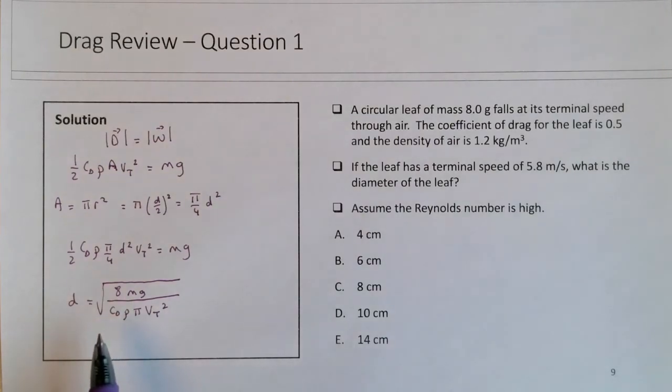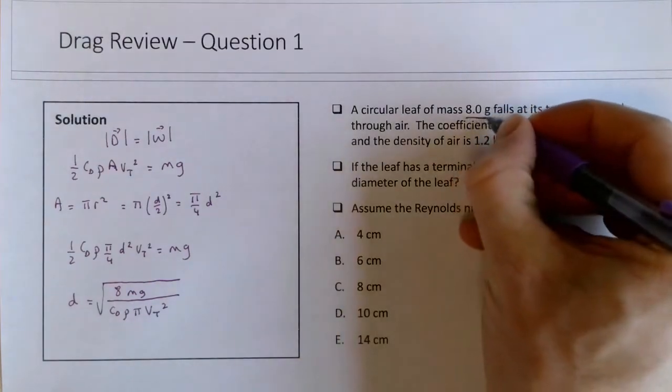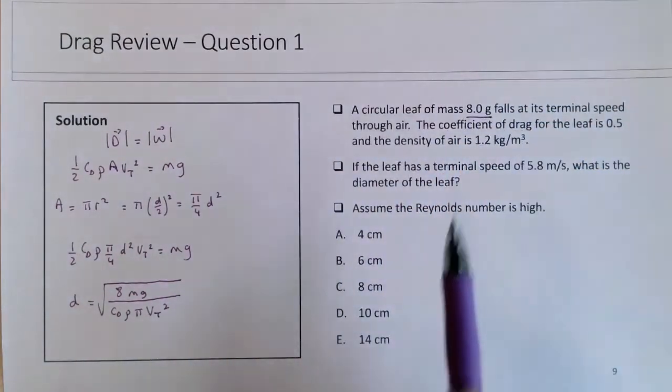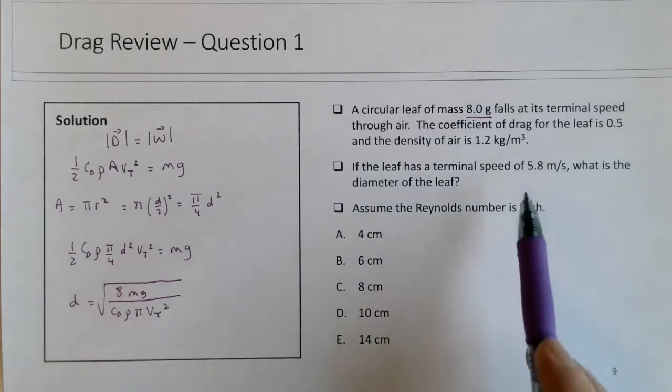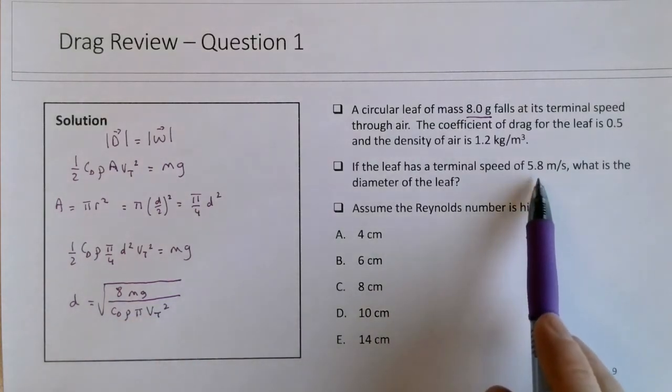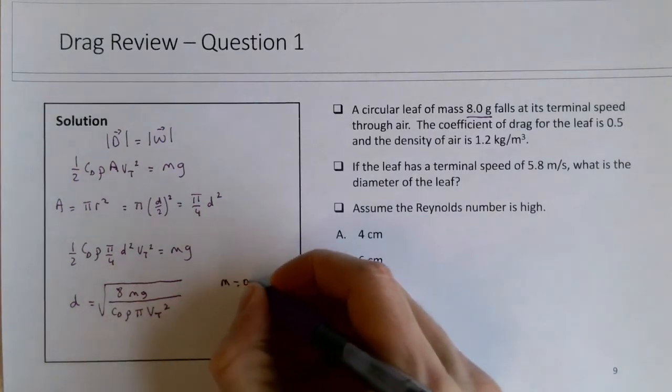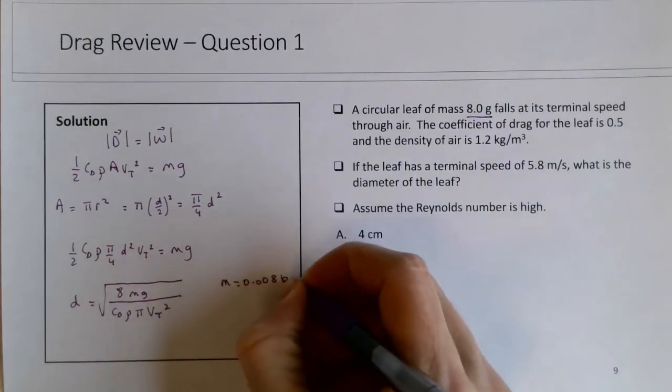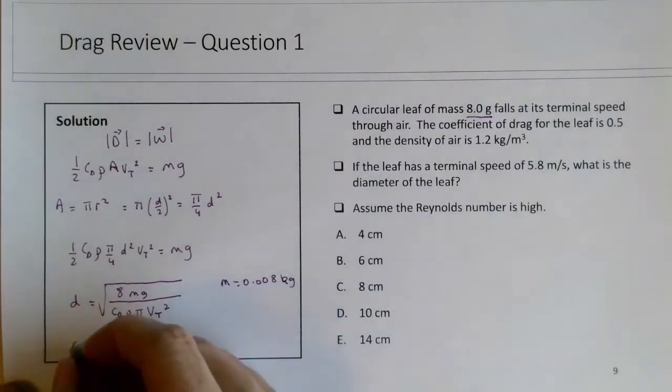We're given the mass of the leaf, and you're going to have to convert that to kg, so 0.008 kg. G is a constant, cd is given, rho is given in the correct units, pi is a constant, and you're given the terminal speed in the correct SI unit. The only thing you need to make a note of is that m is 0.008 kg. It's the only unit conversion you need. Everything else is in SI units.